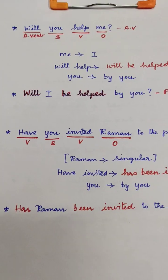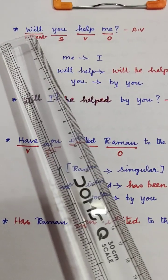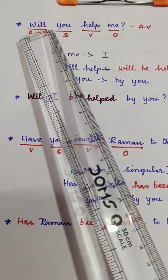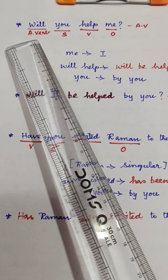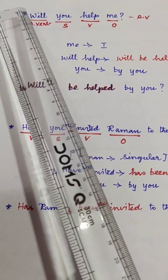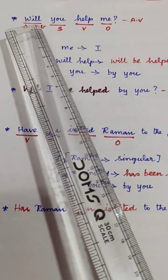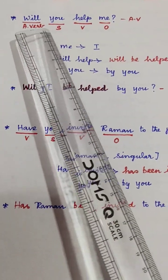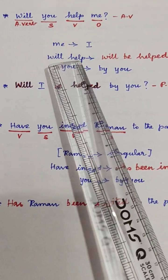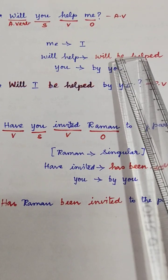Next: 'Will you help me?' — Look at the first word: 'will' — that is a modal auxiliary verb. 'Help' is the main verb. So 'will help' changes to 'will be helped'.